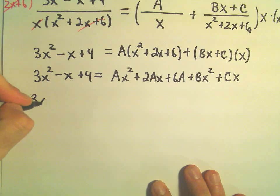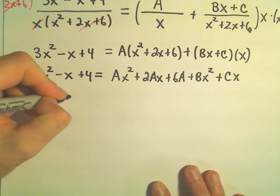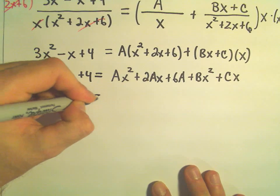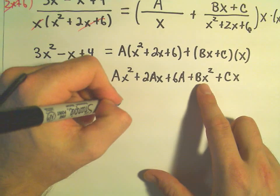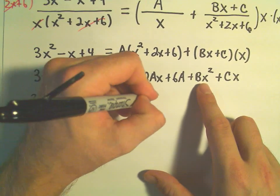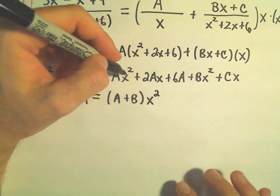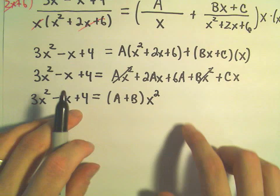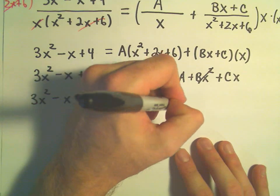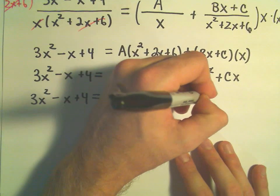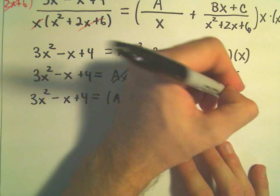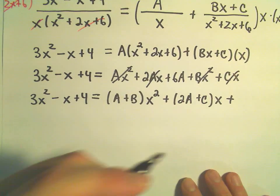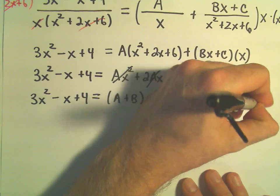And now I'm going to do this process of sort of regrouping everything together. So I see we've got an Ax² and a Bx² squared. So I'm going to stick the A and the B in parentheses and pull my x² out to the right. We've got a 2Ax and a Cx. So that's going to give me (2A + C) times x. That will take care of those terms. And then it looks like my only constant term in this case is going to be the 6A.